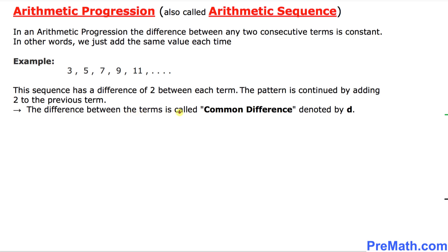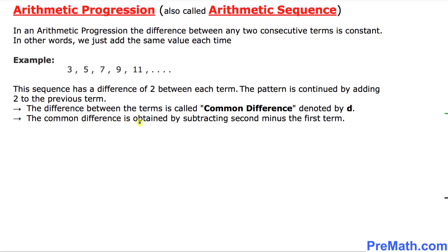One really crucial thing to remember: the difference between any two consecutive terms is called the common difference, which is denoted by D. In this example, our common difference is 2, so D equals 2. The common difference is obtained by subtracting the first term from the second: 7 minus 5 equals 2, and 5 minus 3 equals 2. If you look at another pair, 11 minus 9 gives us 2 as well.